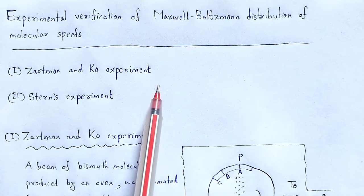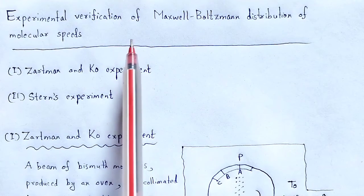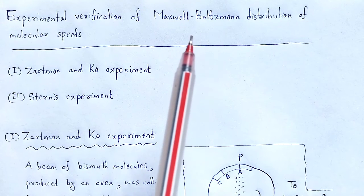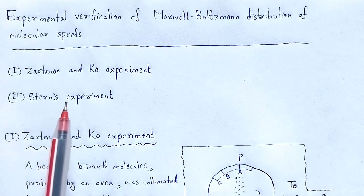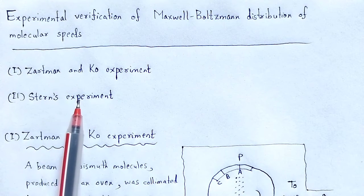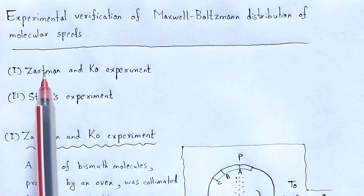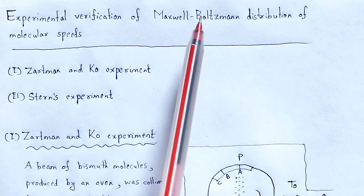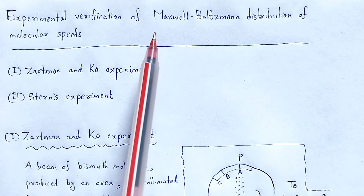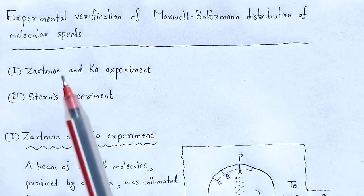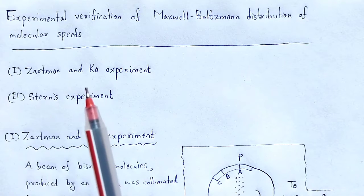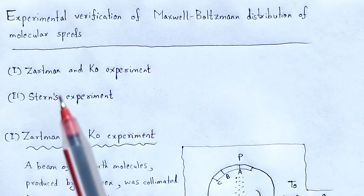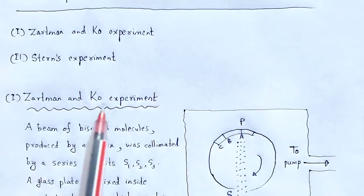Two experiments are done to establish the verification of Maxwell-Boltzmann distribution of molecular speeds. The first experiment was done by Stern's, but was later modified by two scientists Jatman and Co to verify the Maxwell-Boltzmann distribution of molecular speeds. In this video, we discuss these two experiments one by one — their setups and outcomes. First experiment: Jatman and Co experiment.